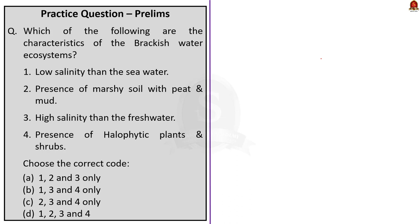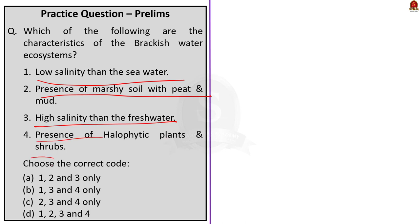The first practice question is about brackish water ecosystem: which of the following are characteristics of a brackish water ecosystem? Statement 1: low salinity than seawater. Statement 2: presence of marshy soil with peat and mud. Statement 3: high salinity than freshwater. Statement 4: presence of halophytic plants and shrubs. The correct answer is option D — one, two, three, and four. All are characteristics of brackish water ecosystems.